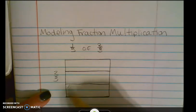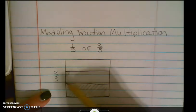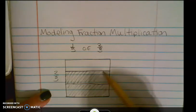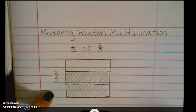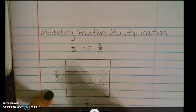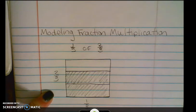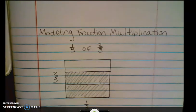Using my pencil I'm going to shade in the two-thirds of our brownie pan that we started with. And now we're going to figure out what one-third of two-thirds is. So at the bottom of my brownie pan I'm going to label it with one-third.